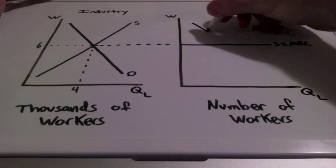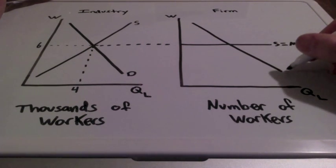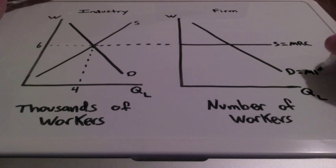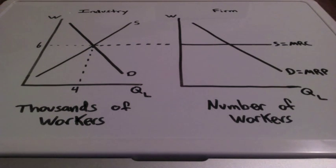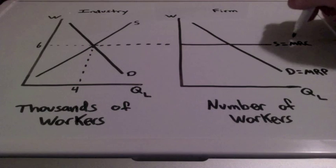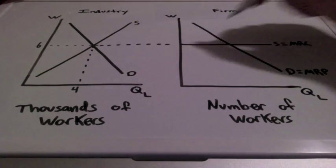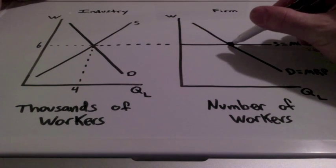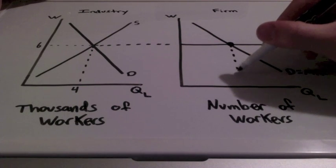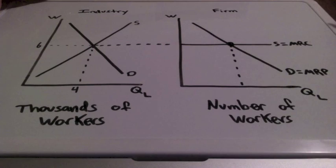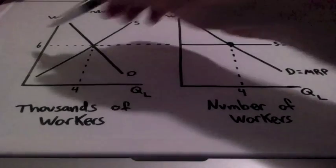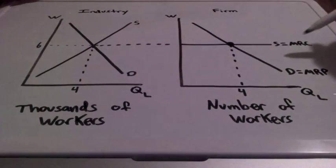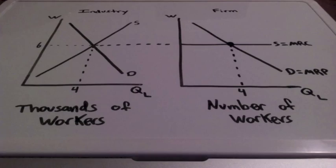The firm's demand curve is going to be downward sloping because of the law of diminishing marginal returns. This intersection where supply equals marginal resource cost and where demand equals marginal revenue product is the quantity that the firm is going to hire for their labor. So we have a total of 4 workers and a wage of $6. This is a perfectly competitive labor market.